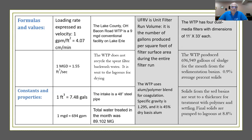This is a 9 MGD conventional water treatment plant. They don't recycle their spent filter backwash water. In the month, they treated a little over 89 million gallons. And we got some filter information in this module. We see that the unit filter run volume — which is the number of gallons produced per square foot of filter surface area during the entire run — will be listed, and we'll show you those values in the next slide.